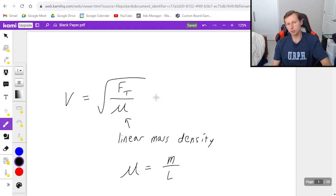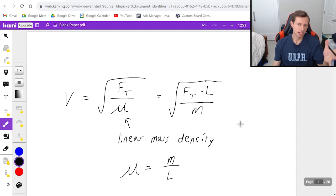Which means if you want to, you can rewrite this equation slightly differently, like this: the square root of F_T, the tension force, times length, divided by mass m. You can think about how that comes about. If you don't understand, then don't worry about it, just memorize this.